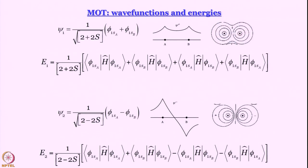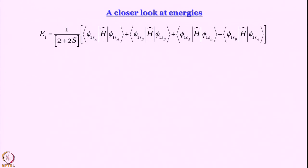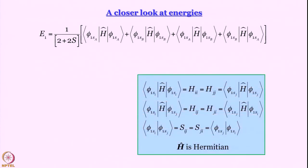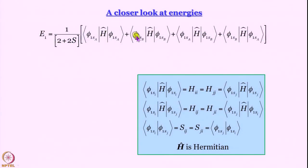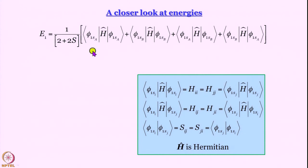We have the wave function and expressions for the expectation values of energy for bonding and anti-bonding situations. When the same orbital appears in both bra and ket, we call that integral H_ii. When we have 1s_a in the bra and 1s_b in the ket, or vice versa, we call it H_ij. H_ij equals H_ji, which comes from the property of Hermitian operators — the turnover rule — and for this course we take it axiomatically.